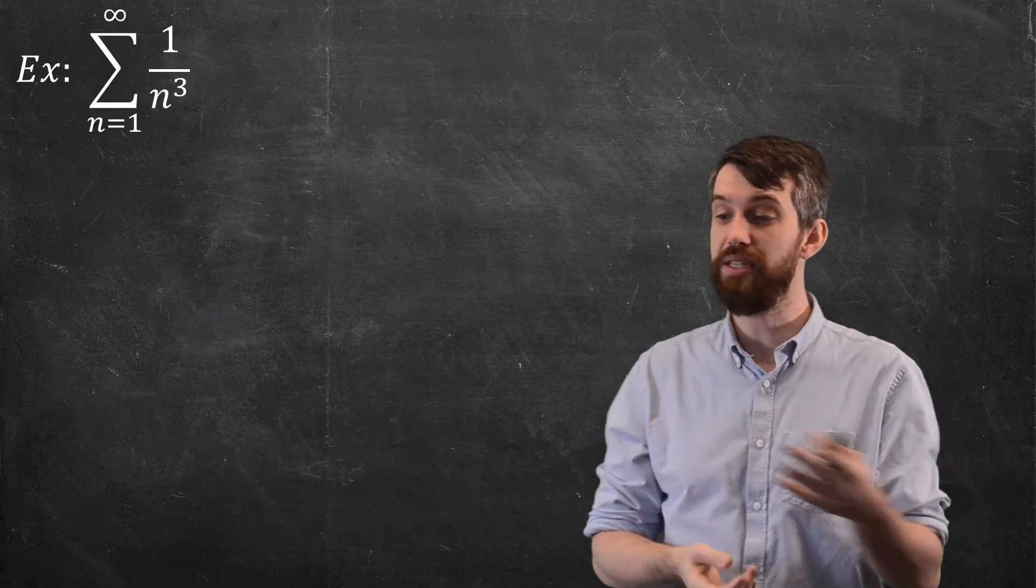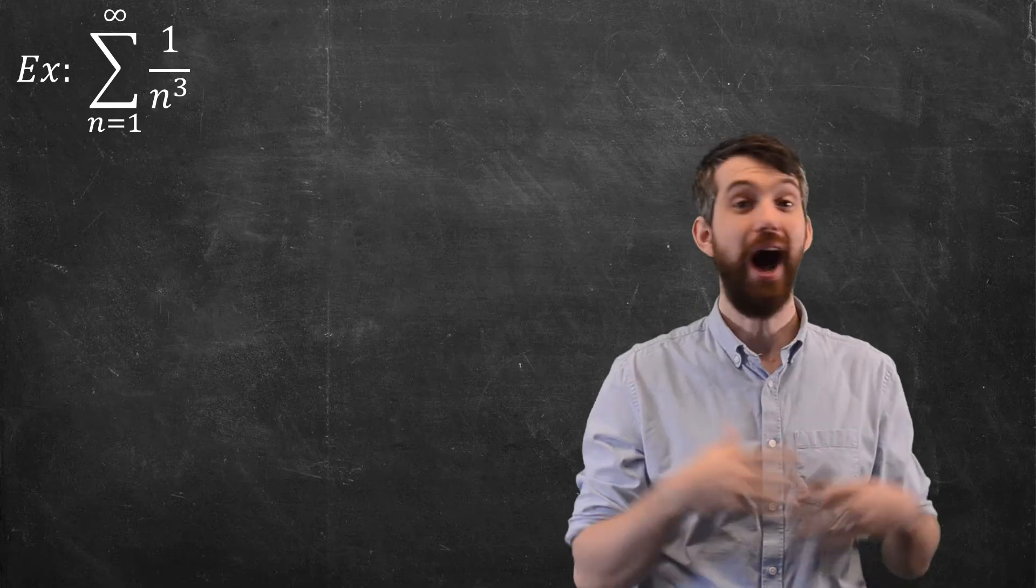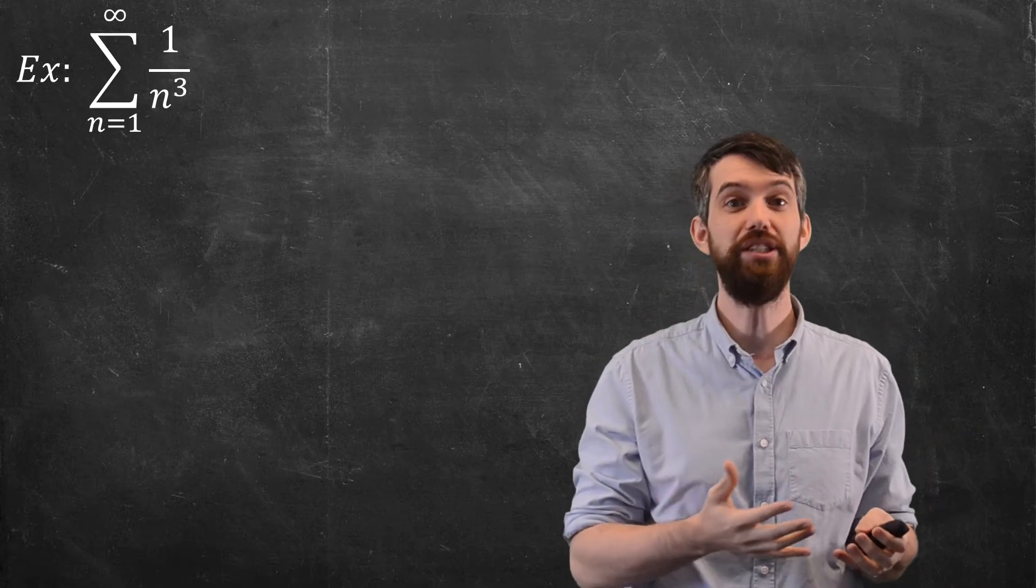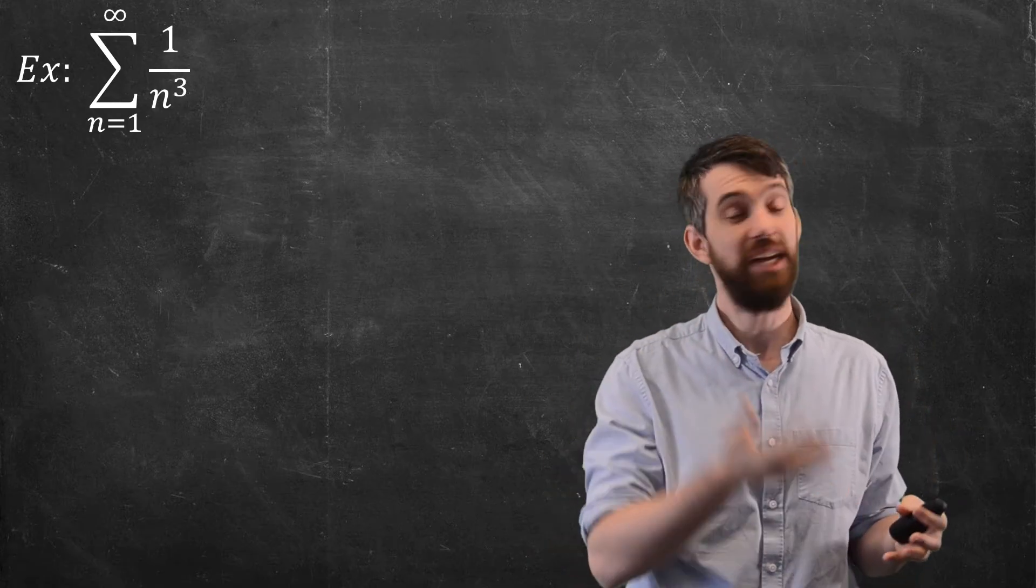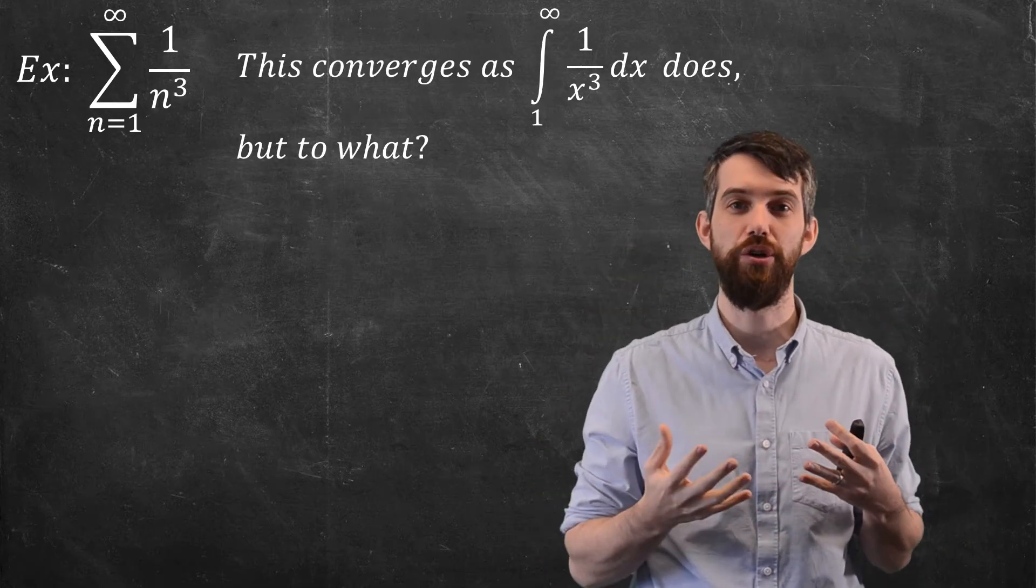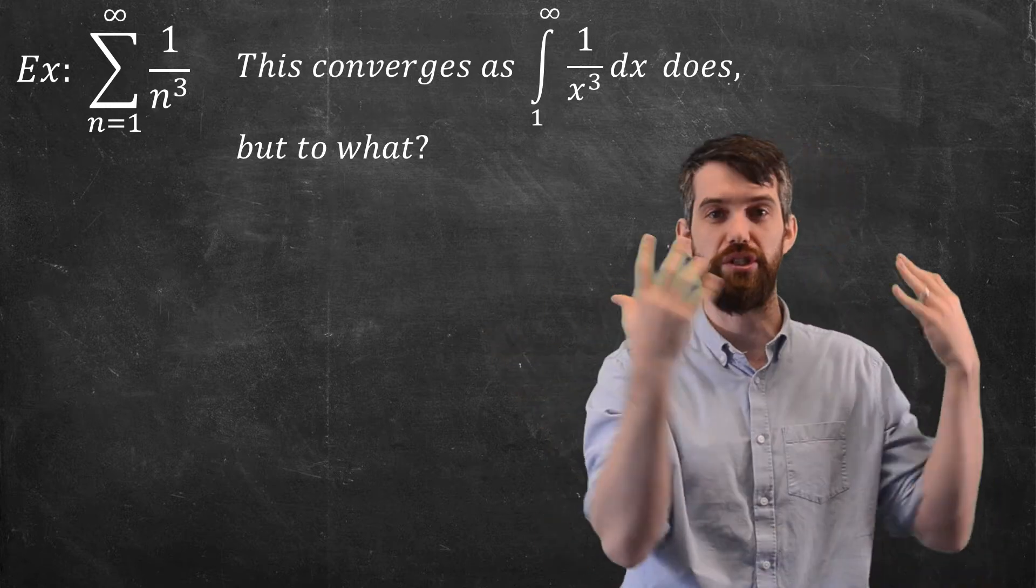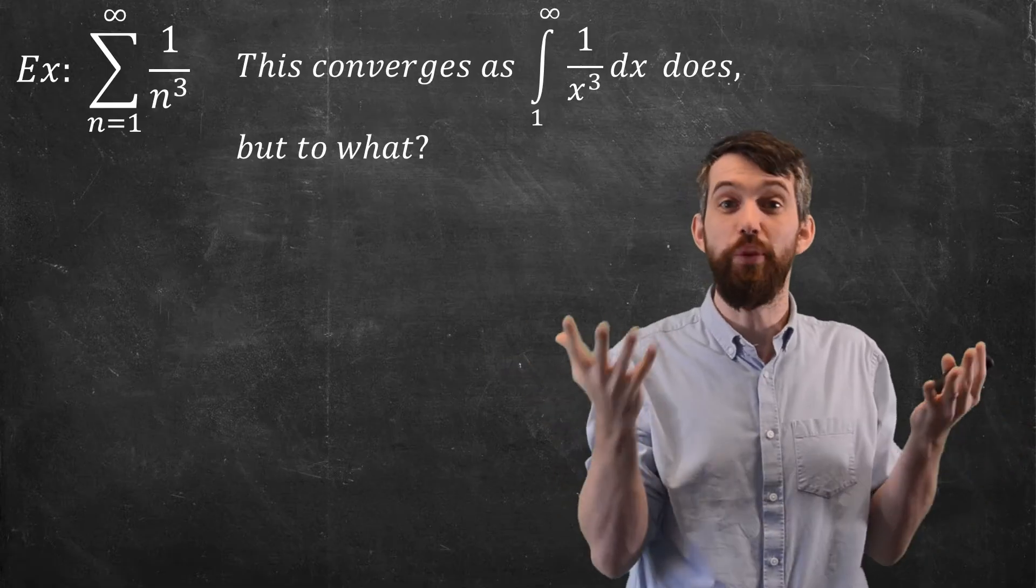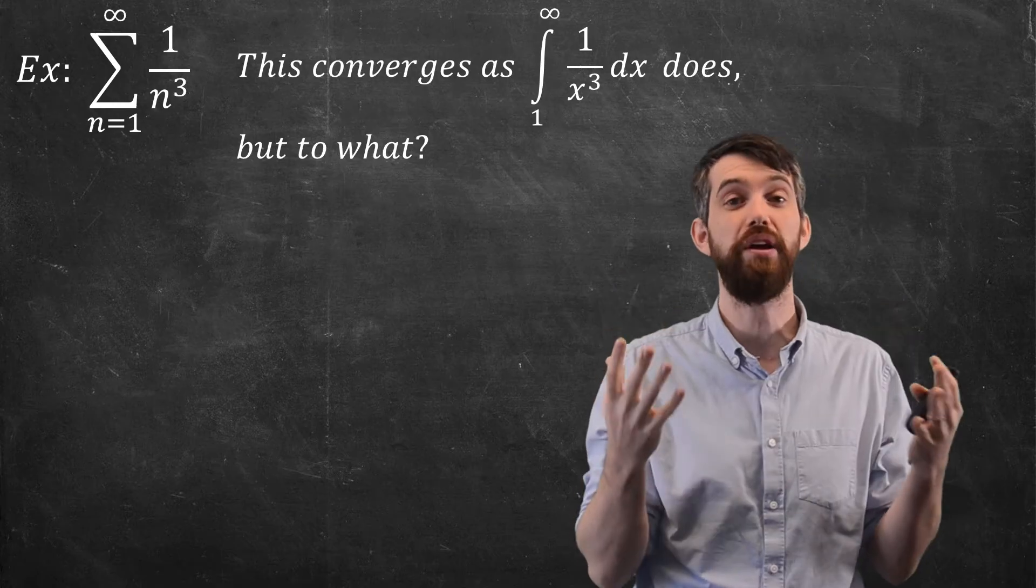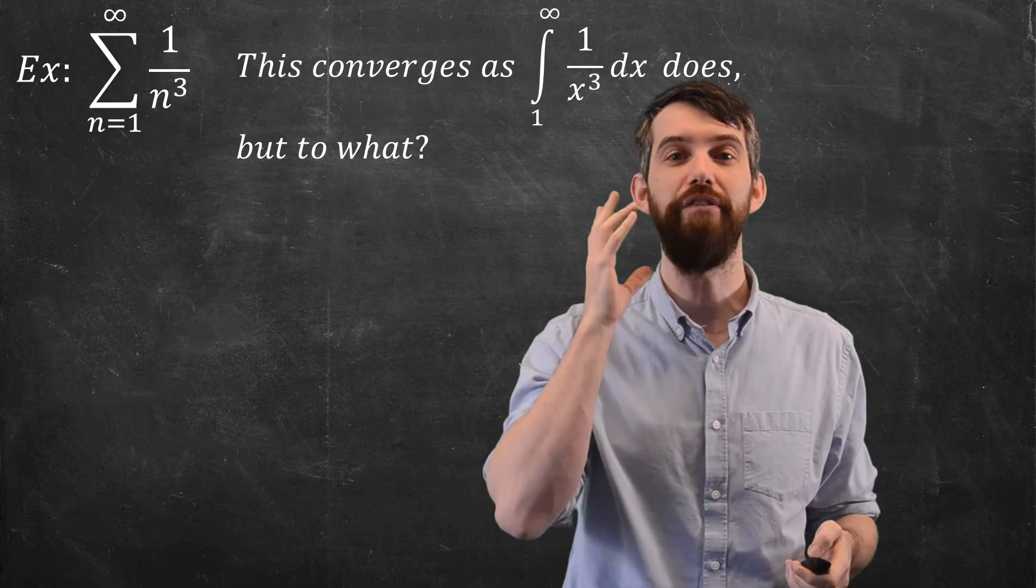As an example, let's consider this series, the sum from 1 up to infinity of 1 over n cubed. I know this series converges. If we go back to the first video on the integral test, this is just a p series, and the p series converges here because I relate it to the p integral 1 over x cubed, where p, the 3 here, is greater than 1. But what does it converge to? We don't know. The integral test only tells us does it converge or diverge.